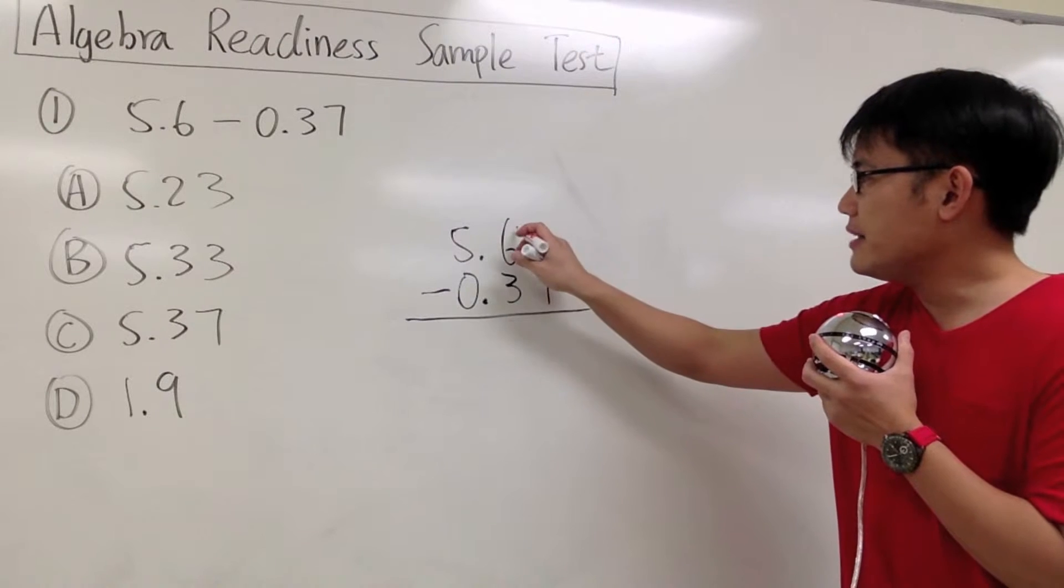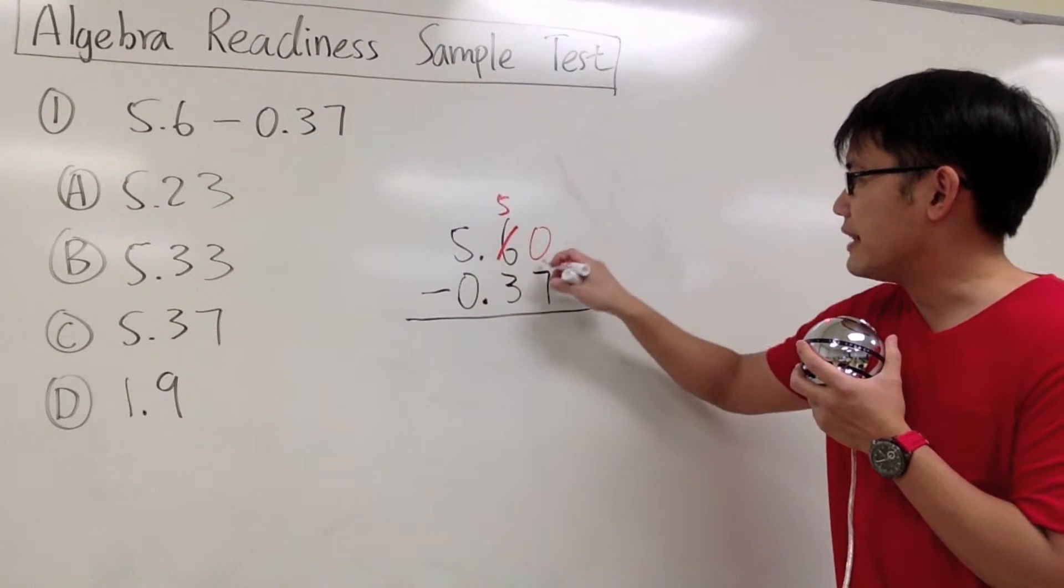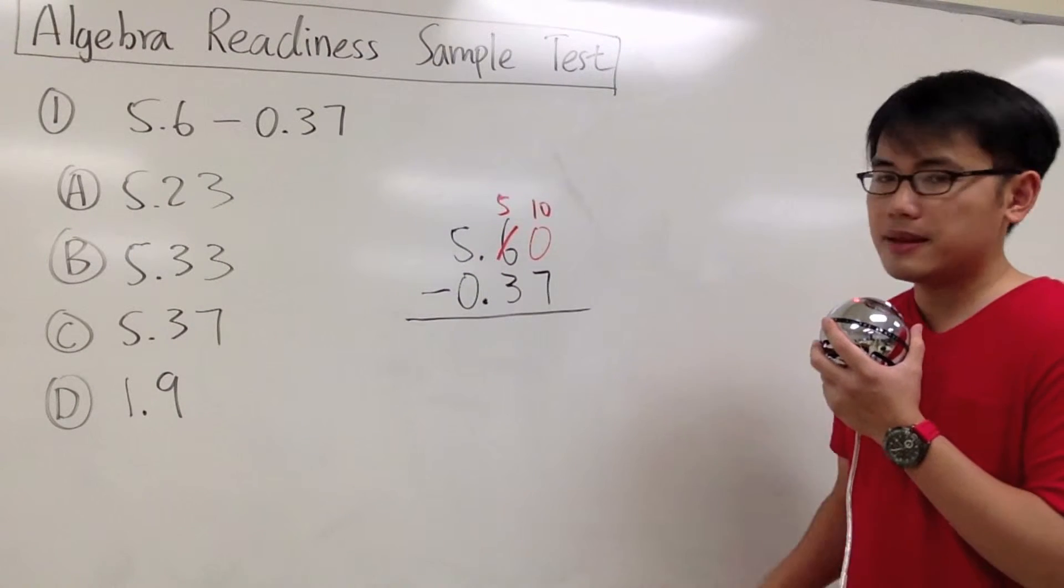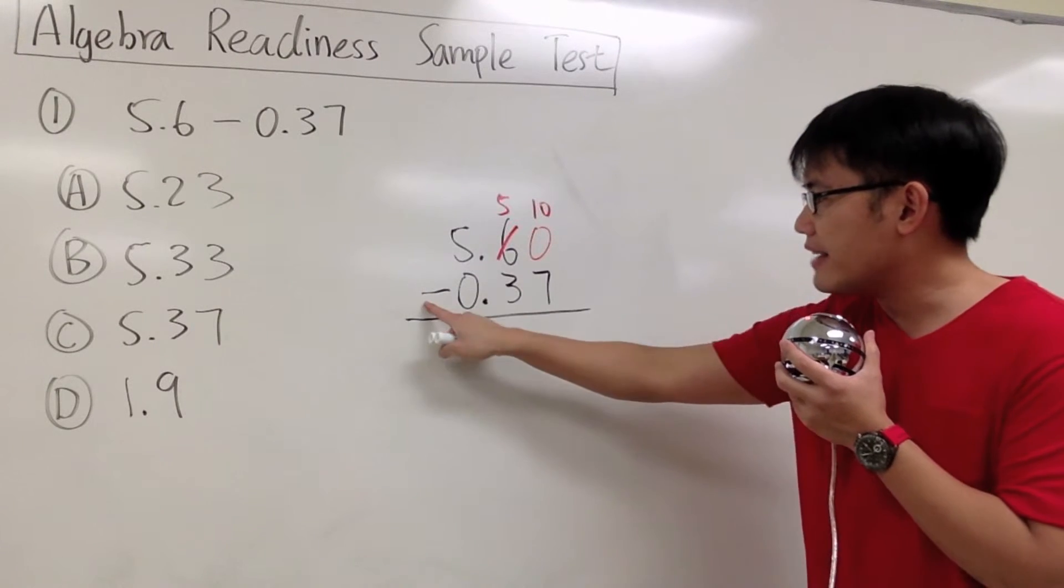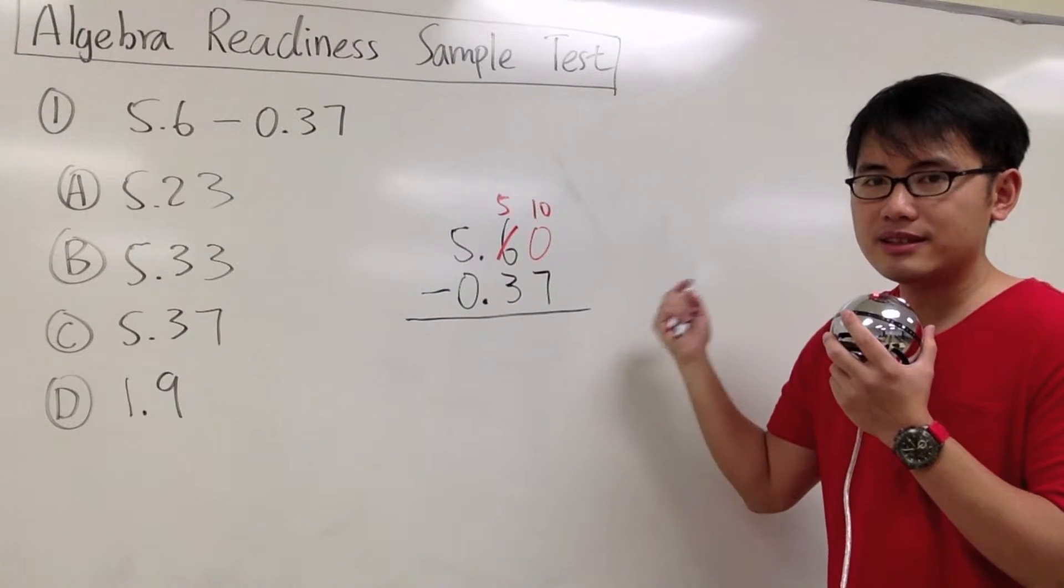Let's look at the 6. Make the 6 into a 5, and then that way we can make the 0 into a 10. So we can do 10 minus 7, and that will give us 3.